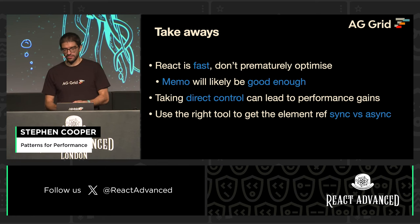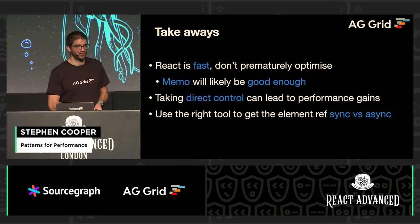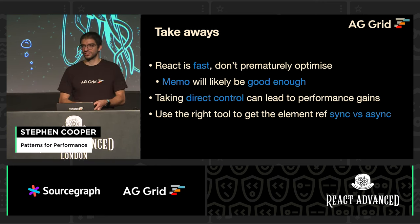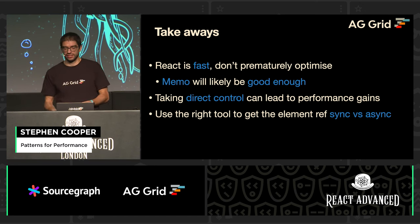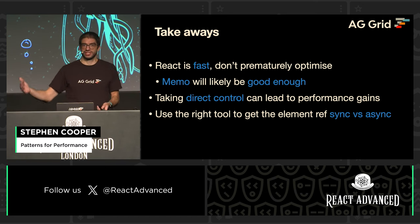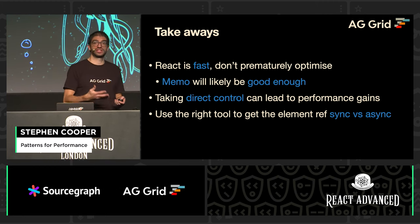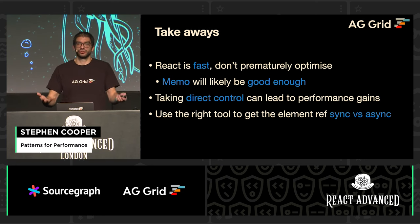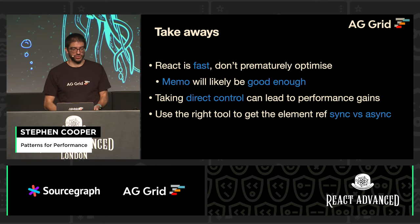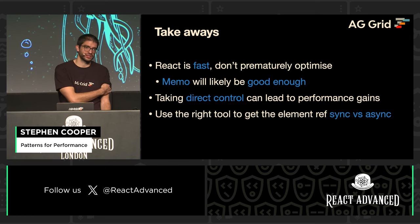Some takeaways: React is fast — you don't have to prematurely optimize everything. Wait until you have a performance issue before adding this complexity to your app. Memo is likely good enough. But with AG Grid, we wanted to push it to the limit and ensure that no matter how much data users put into our grid, it still performs — because that's why people choose to use AG Grid. Taking direct control can lead to these performance gains, but make sure you use the right tool, as we looked at the different approaches, so you don't end up introducing new bugs into your code.